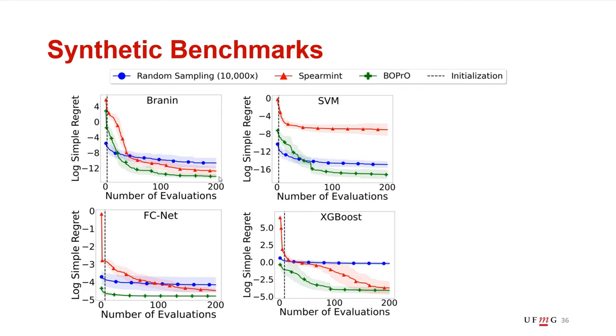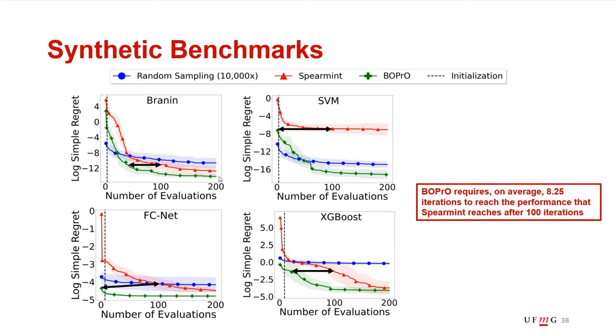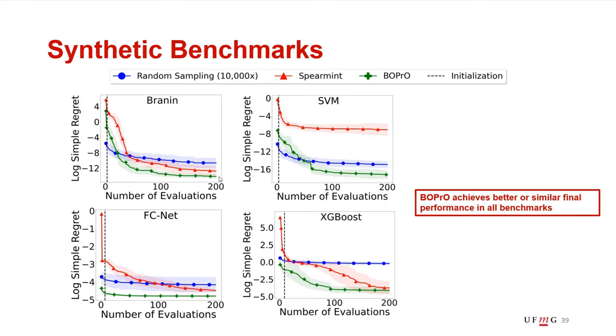And basically, we saw that BOPrO can outperform random sampling in all of the benchmarks. And compared to standard Bayesian optimization, BOPrO is able to converge faster, an average 12 times faster than Spearmint, and also finds similar or better performance in all of the synthetic benchmarks. Showing that the prior helps BOPrO to outperform standard Bayesian optimization and finds better configurations better and faster.